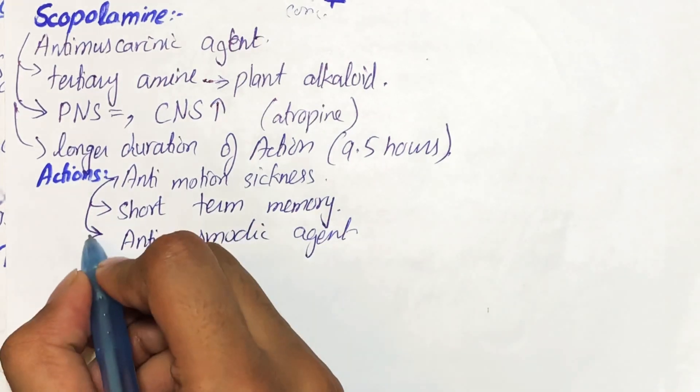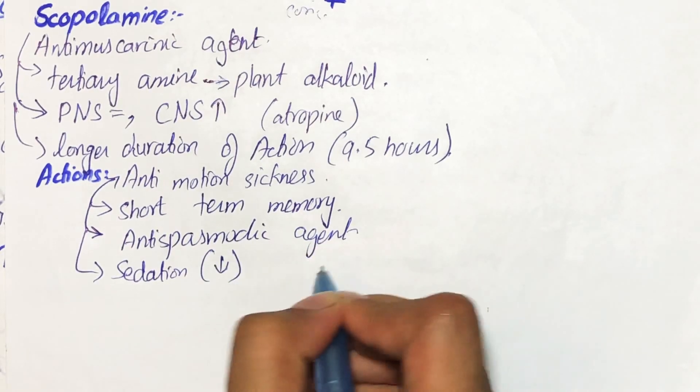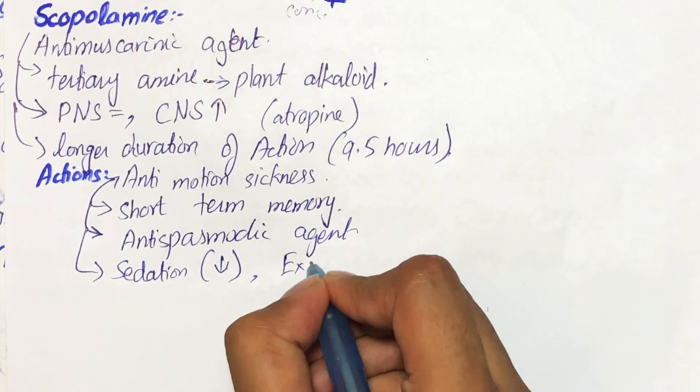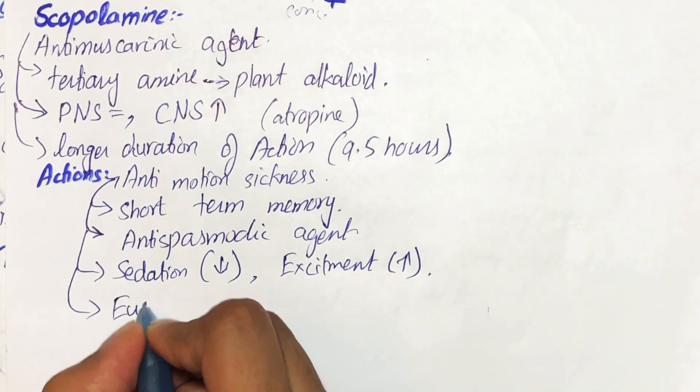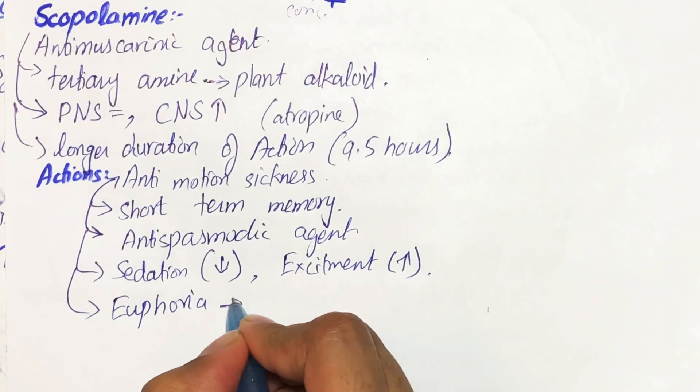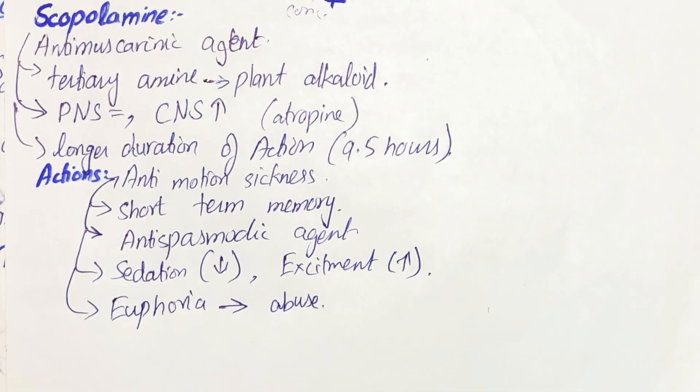But in contrast to atropine, scopolamine actually produces sedation when it is given in lower doses. But when it is given in higher doses, it can produce excitement. It can also produce euphoria, which is actually a feeling of happiness. This is why scopolamine is susceptible to abuse. People can misuse it for euphoria because it makes them feel happy, so they can use it for such negative purposes.